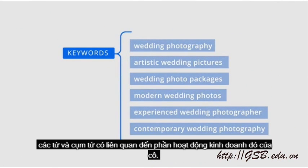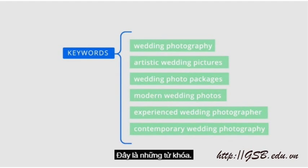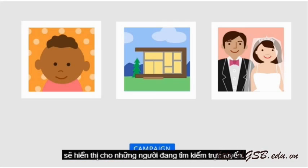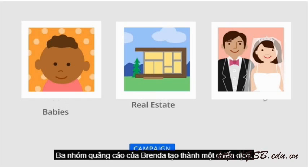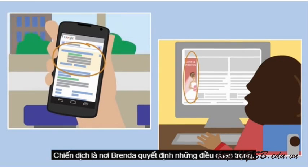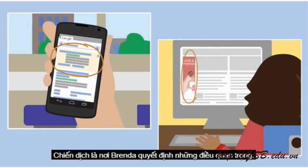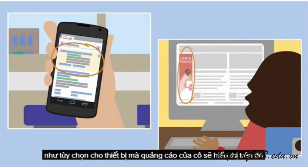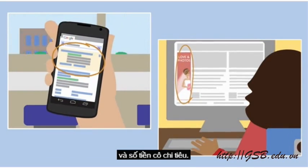Brenda assigns to each ad group the words and phrases that are relevant to that part of her business. These are keywords. AdWords uses keywords to help decide which ads to show to people searching for things online. Brenda's three ad groups make up a campaign.